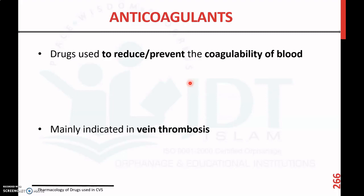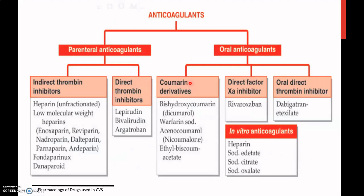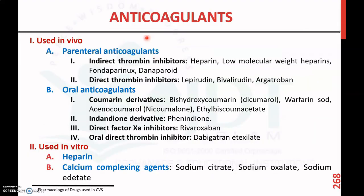Anticoagulants are mainly classified into those used in vivo and those used in vitro. The difference is: in vivo means inside the body, and in vitro means outside the body, such as for blood purification outside the body.